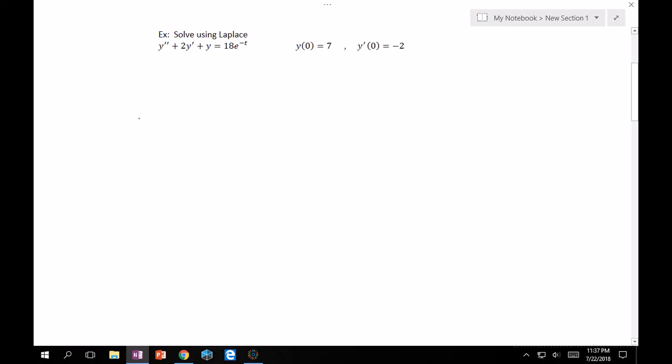So, y double prime plus 2y prime plus y is equal to 18e to the minus t, given our initial conditions that at 0 the function is equal to 7, and also the derivative at 0 is equal to minus 2. You can solve this using method of undetermined coefficients, variation of parameters. Now, let's solve it the third and final way, which is Laplace Transform.